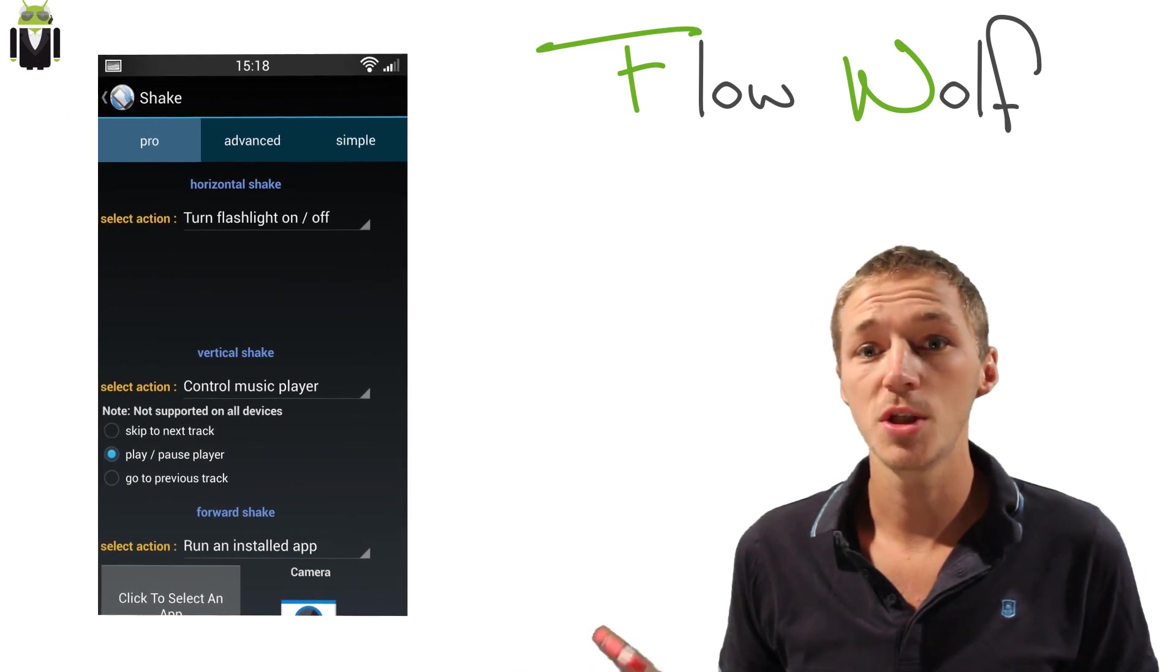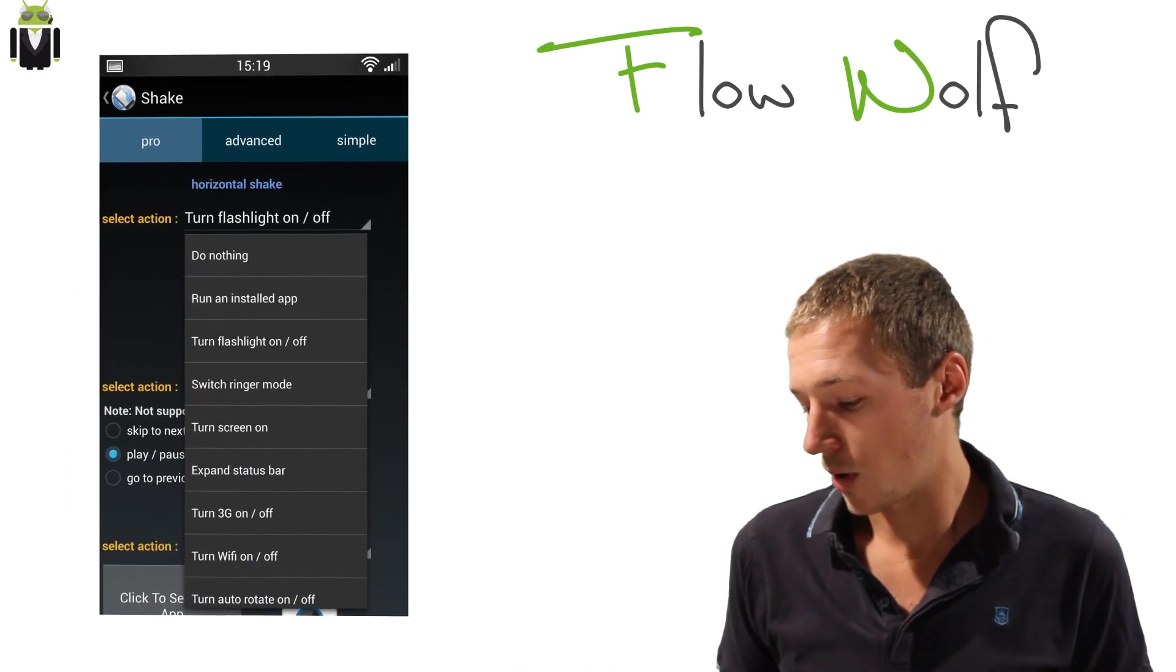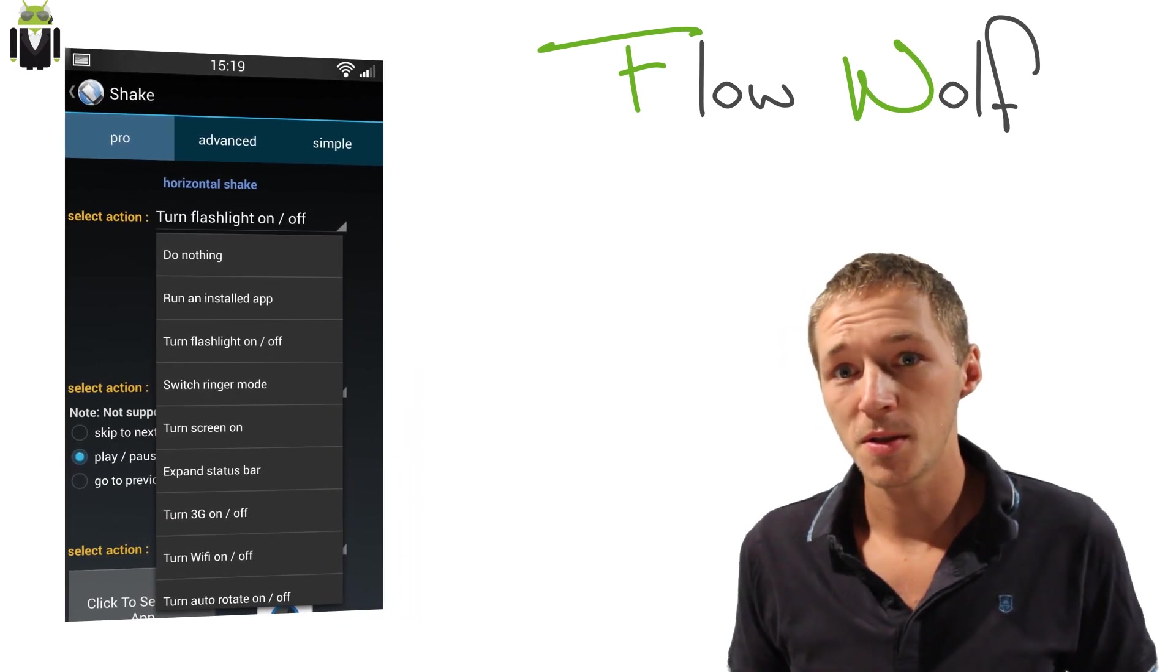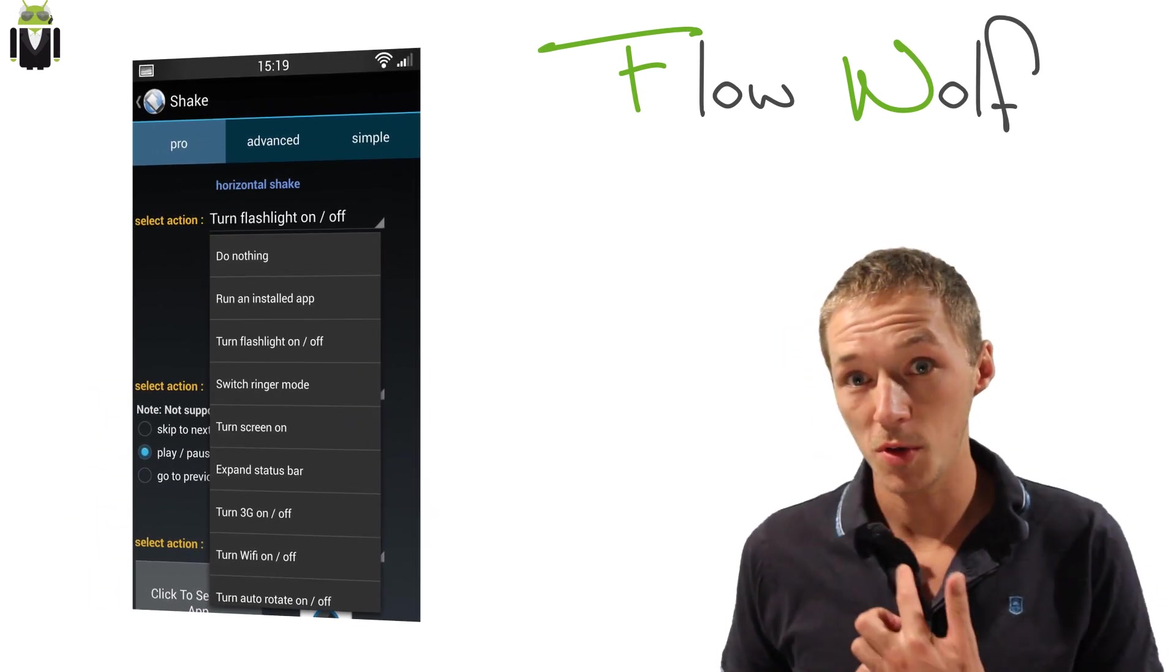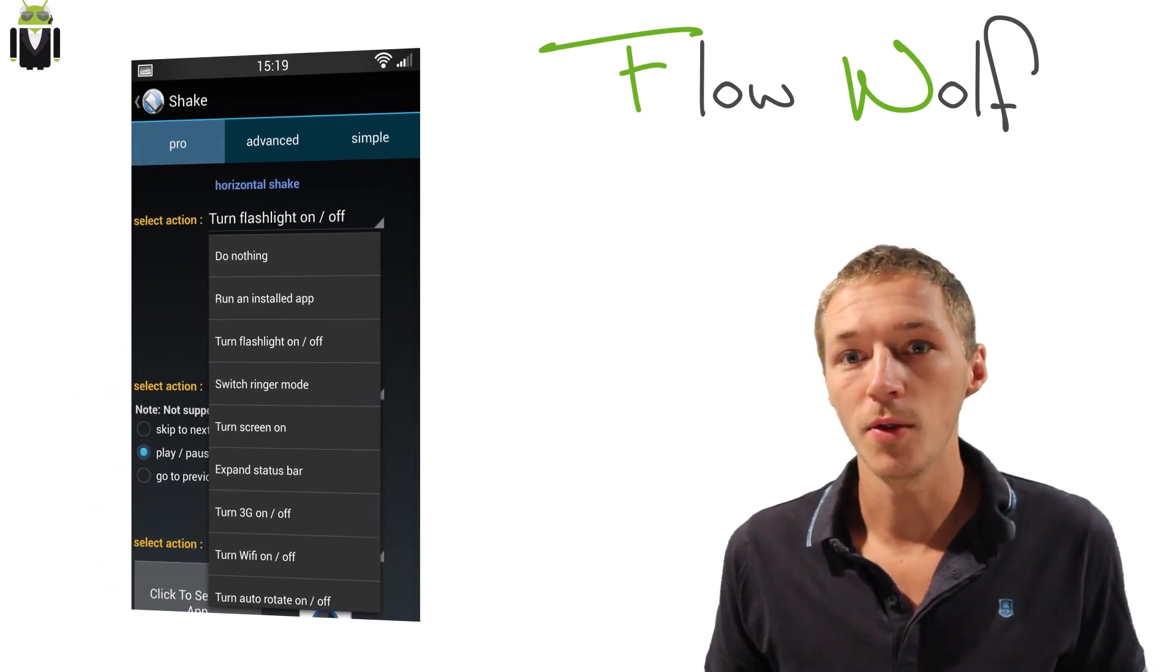You can make different things. For example, you can do nothing, run an installed app, switch ringer mode, turn the screen on, expand the status bar, and other things you can see just behind me.